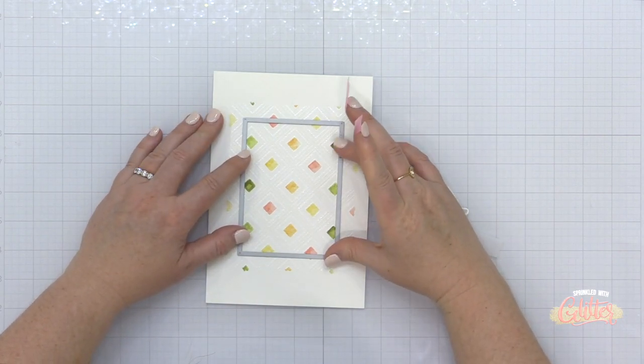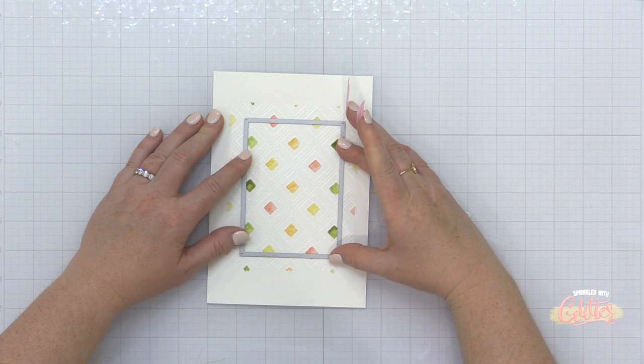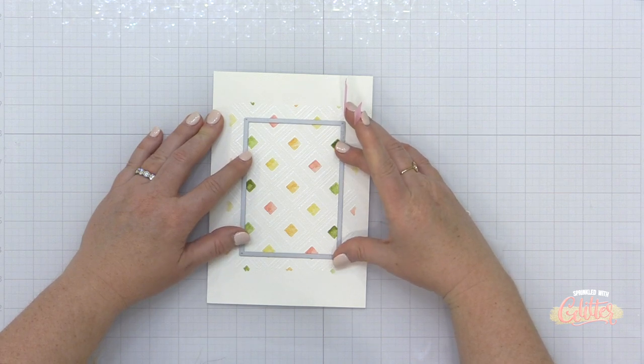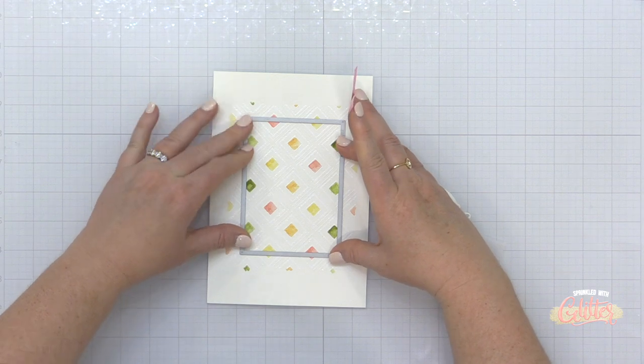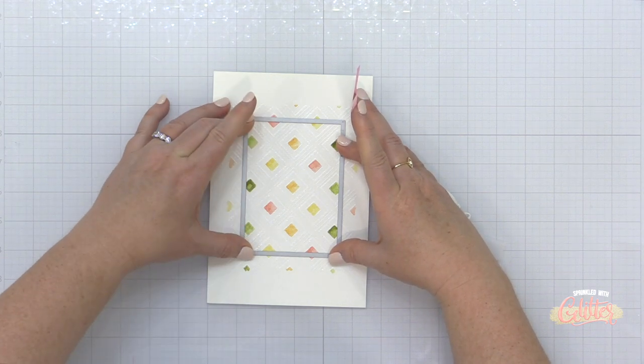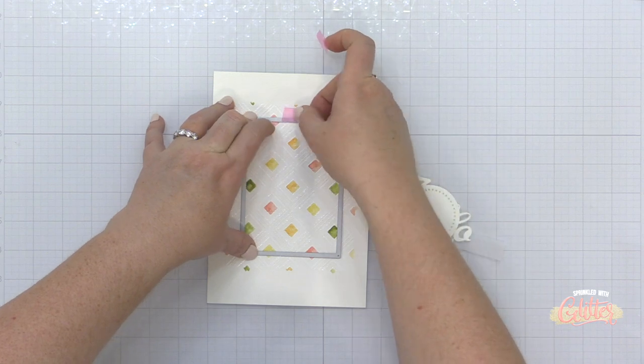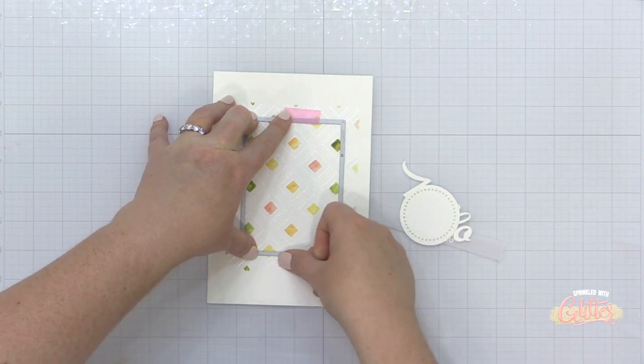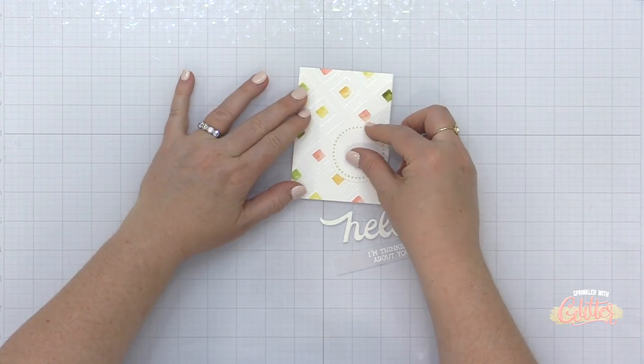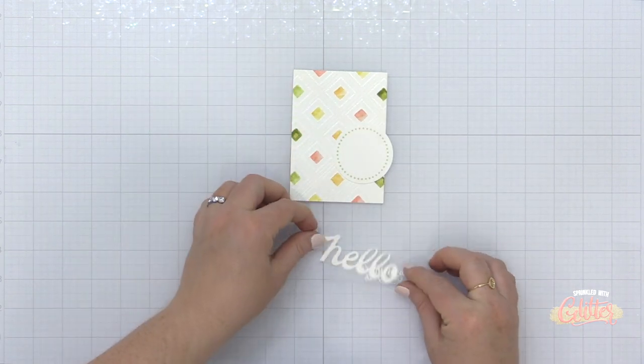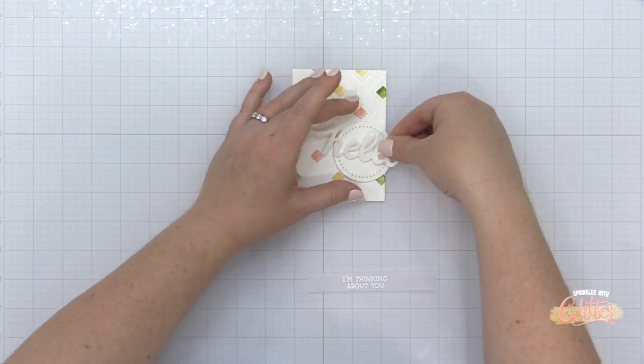Now this background, this is kind of why I stamped this on a larger piece. I want to square this up and cut it down just a little bit. So I am taking an essential rectangle die. This is from the Essentials by Ellen Line. And I'm going to die cut this. And that way I get the area that I want. I make sure everything is squared up. And now I have all of my pieces kind of ready to assemble here.